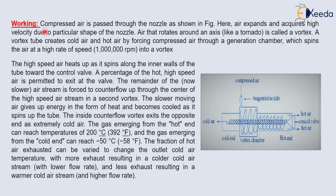Let's see the working of the refrigeration system. Compressed air is passed through the nozzle as shown in the figure. The air expands and acquires high velocity due to the particular shape of the nozzle. Air that rotates around an axis like a tornado is called a vortex.